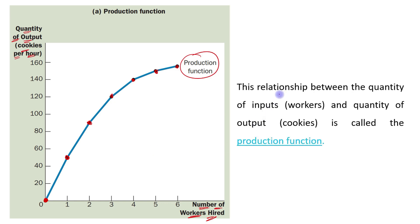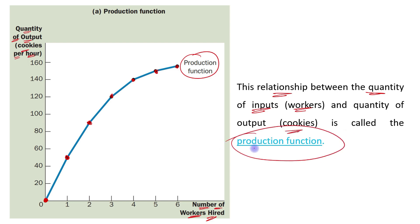This relationship between the quantity of inputs — in our case workers — and the quantity of output, which is cookies, is called the production function. So the relationship between the quantity of input and quantity of output is called the production function.